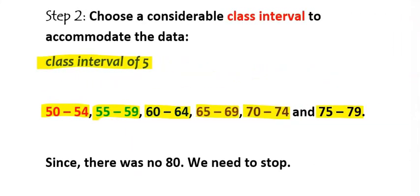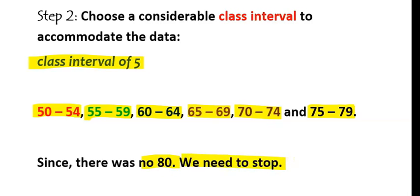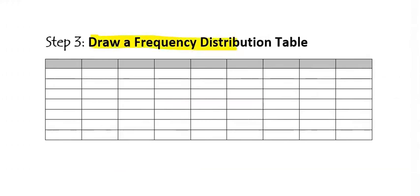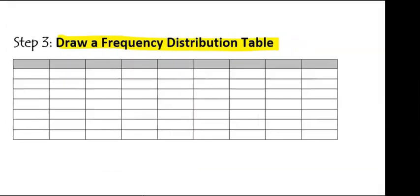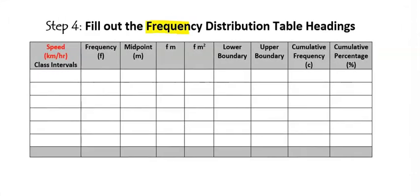The last number we got is 78, so the class interval up to 79 is fine since there was no 80. Step three: draw a frequency distribution table. Step four: fill out the table headings — class interval, frequency, midpoint (class mark), frequency multiplied by midpoint (f×m), frequency multiplied by midpoint squared (f×m²), lower boundary, upper boundary, cumulative frequency, and cumulative percentage.